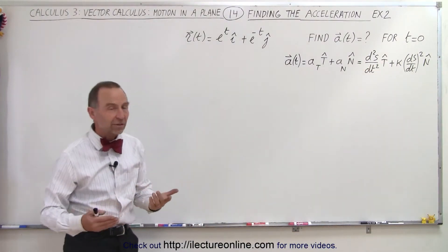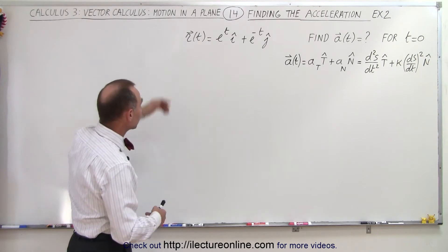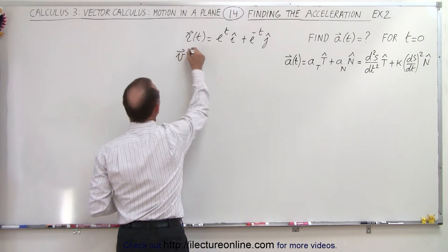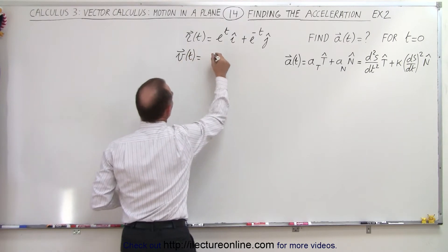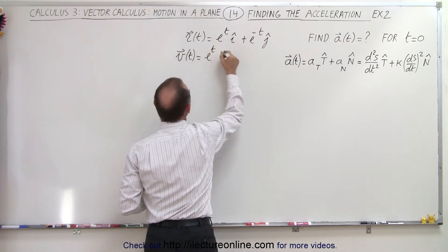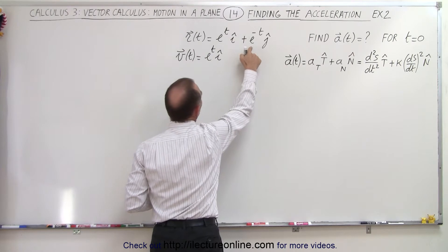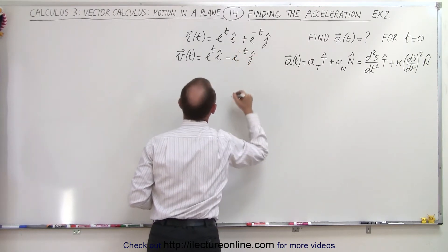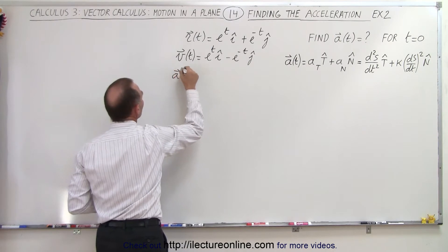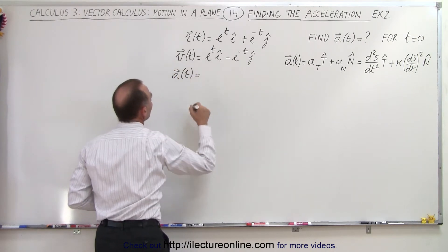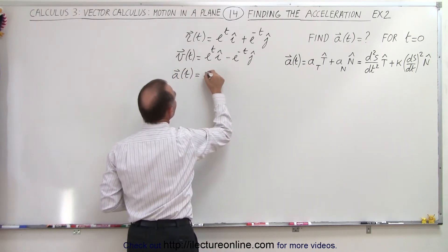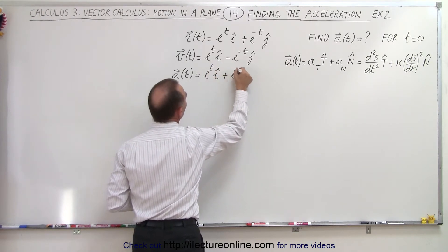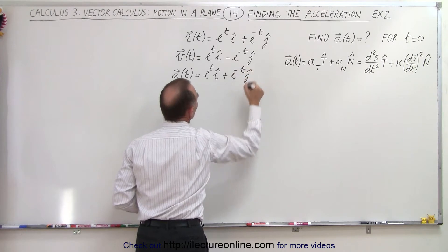First we need to find the velocity vector and acceleration vector in terms of the x and y components. The velocity vector: the derivative of e to the t is e to the t in the i direction, and the derivative of this would be minus e to the minus t in the j direction. Then we find the acceleration vector, which would be equal to e to the t in the i direction plus e to the minus t in the j direction.